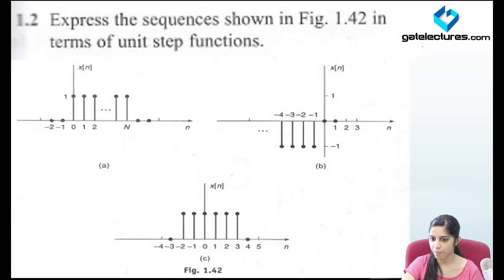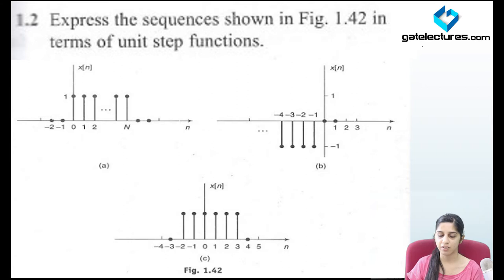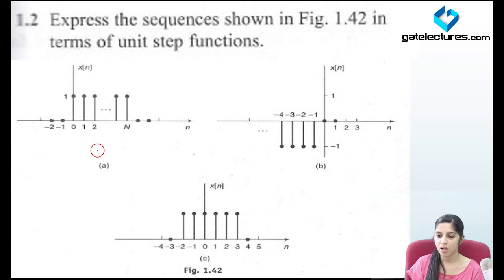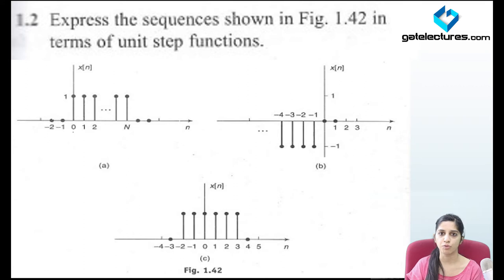Look at the second question. They have given some discrete time sequences and again they are asking you to represent them in terms of unit step functions. These are the discrete time equivalent of continuous time unit step signals. The key difference: in continuous time, if a step occurs from 0 to 5 we say u(t) minus u(t minus 5). But this is not so in discrete time. If I subtract a sequence which starts at n equals 4, the sample at n equals 4 is going to be removed — it is going to escape.